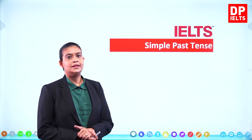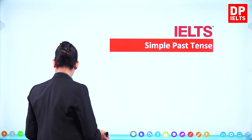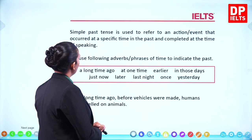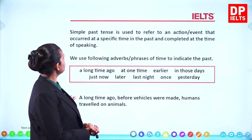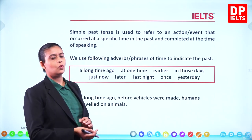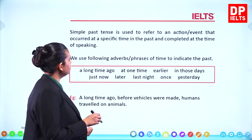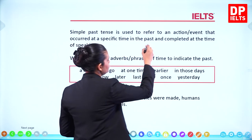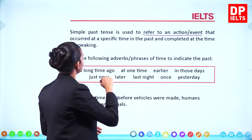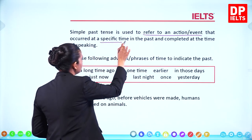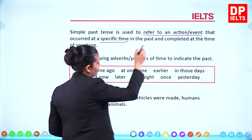We're going to have a look at the simple past tense. The simple past tense is used to refer to an action or event that occurred at a specific time in the past, especially completed at the time of speaking.